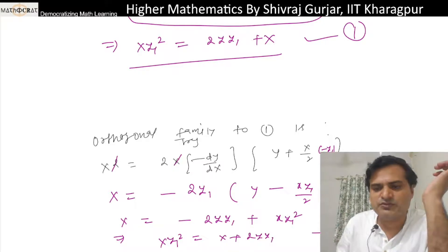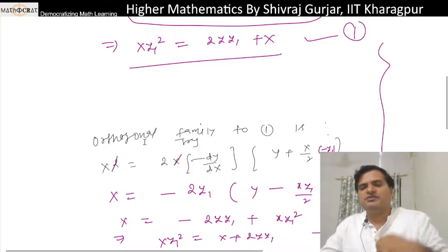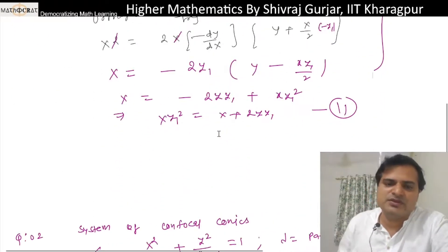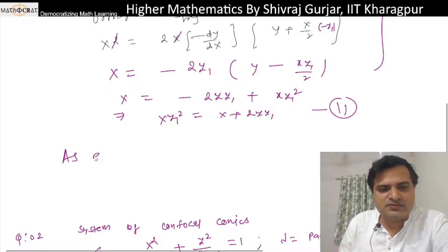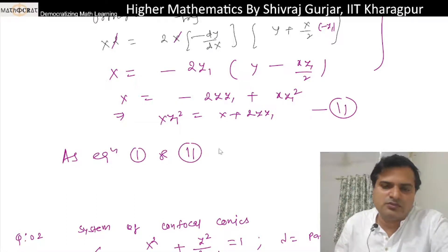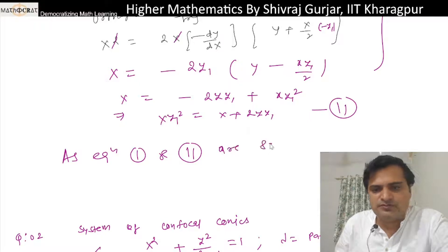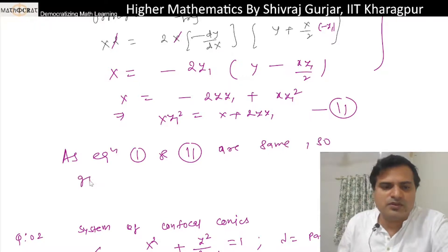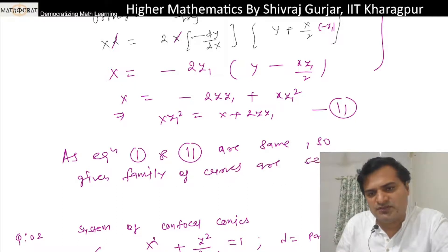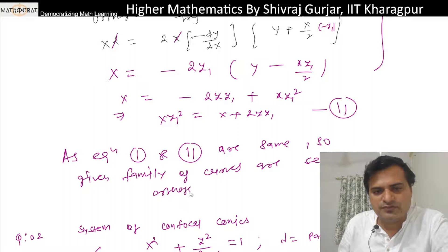Let's call this equation 2. These two differential equations (1 and 2) are the same, so the given family is a self-orthogonal system.